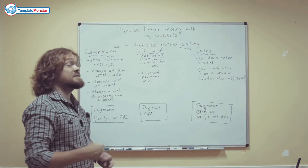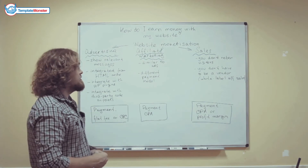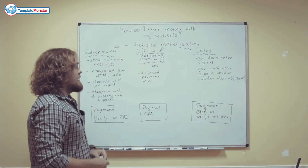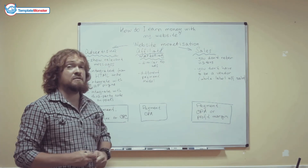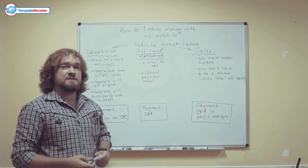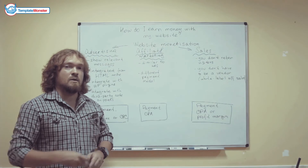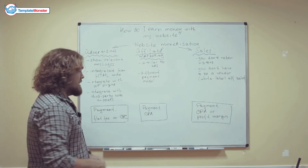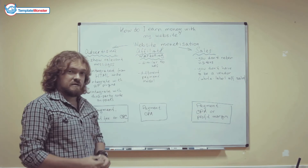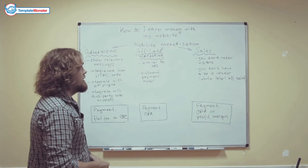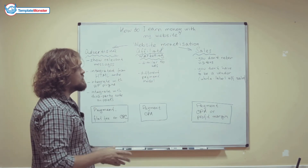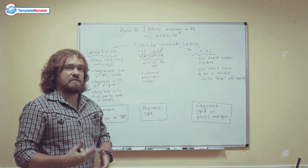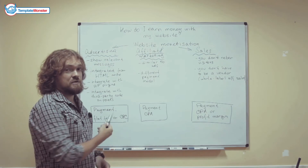Affiliate marketing is kind of similar to regular advertising — you also display relevant messages, banners, products, or text links on your website. However, the difference is in the payment model. You get paid when a visitor you refer to a seller's website makes a purchase there. You can call this a CPA model, or cost per action. Whereas with advertising, you get paid on a flat fee or cost per click basis. Affiliate marketing is relatively easy to integrate, though it does require a bit more effort. However, you can earn more money with it than with plain advertising.